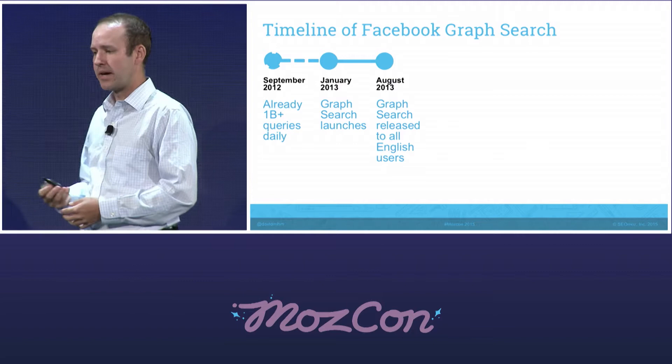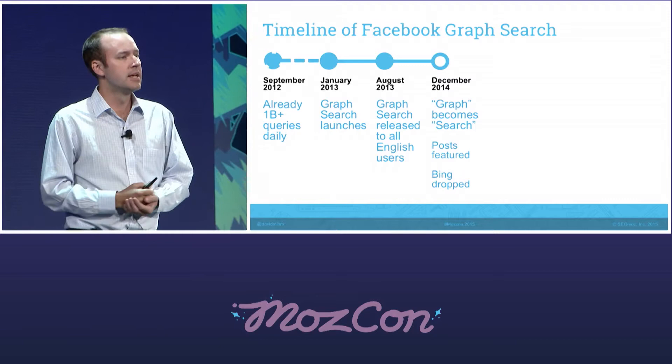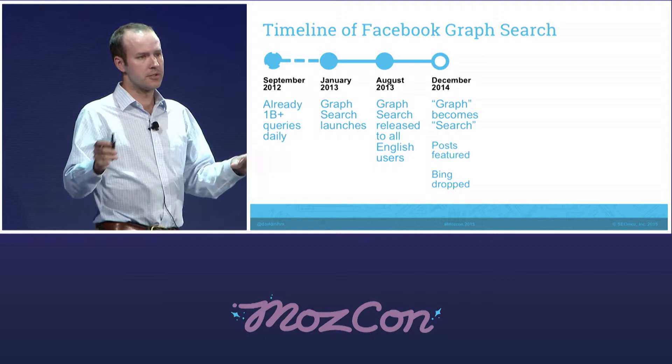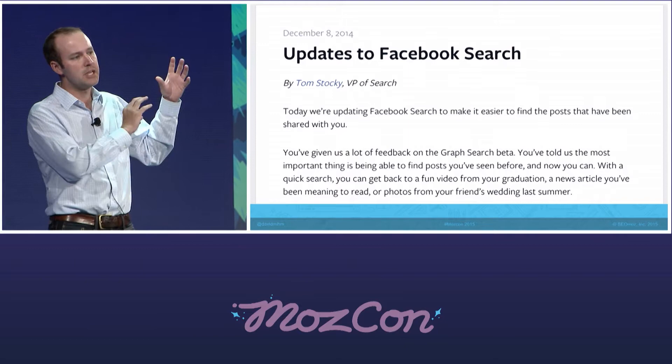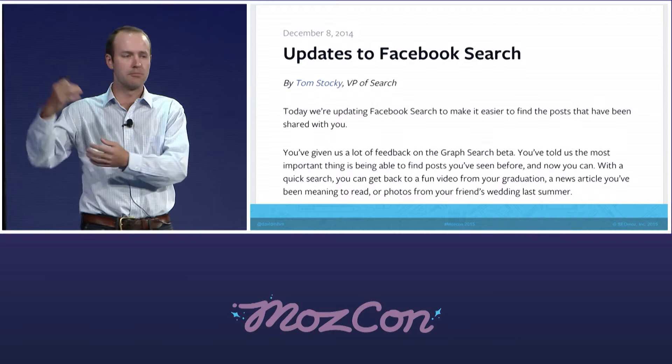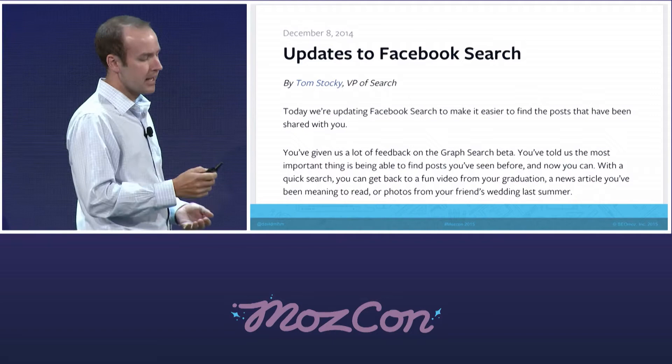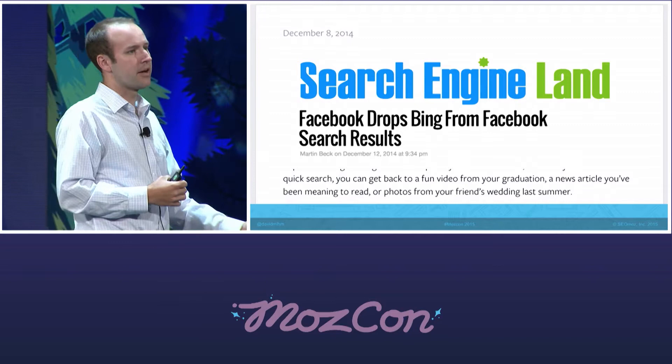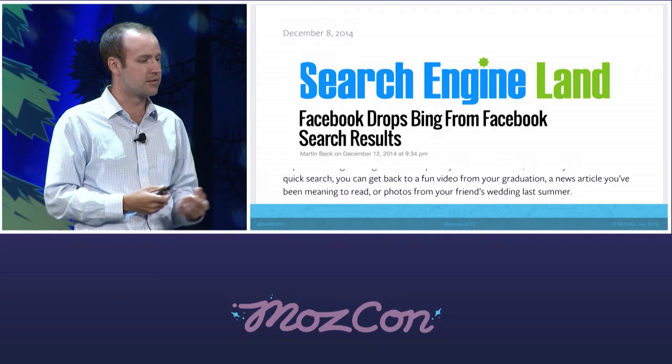Graph Search was rolled out to all English users soon after launch. Not much happened from a product standpoint in the interceding year and a half. Then in December of last year, something pretty important happened: Graph Search became just 'search.' What that entailed was posts as a result type — so instead of people being the prioritized result type, posts got a much bigger boost in terms of the types of results Facebook was showing. Simultaneously, Facebook dropped Bing from backfilling its web search results within their app. I think these two things combined were a pretty important development.